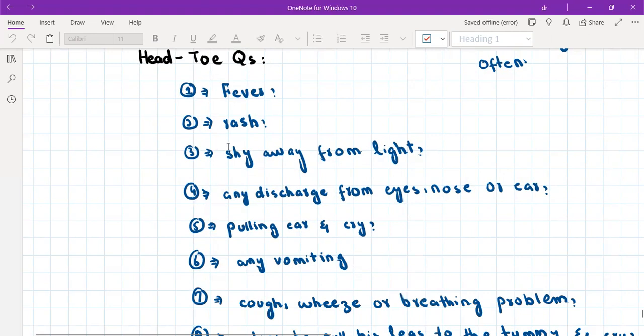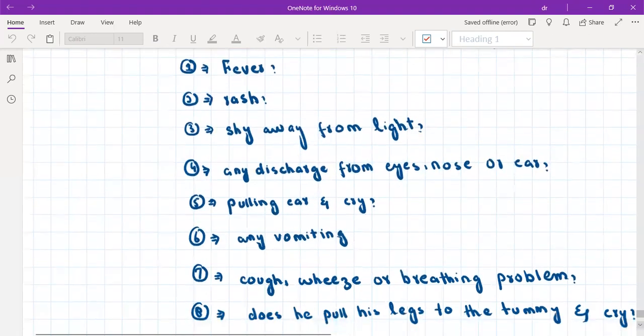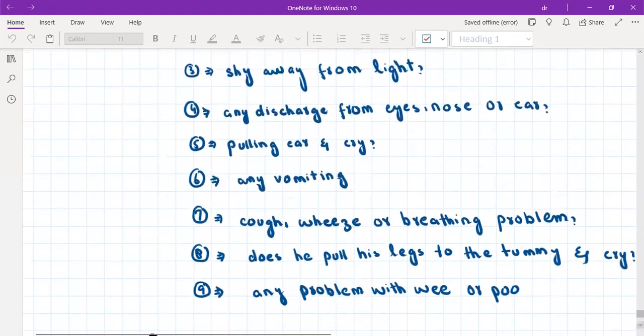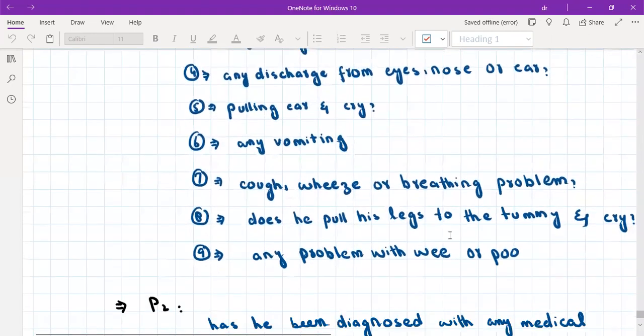Then we have eyes. So we'll ask about, does he shy away from the light? Any discharge from the eyes, nose or ear? Is he pulling his ear and crying? Okay. Which means otitis media. Then there is mouth. So we'll ask about any vomiting. Then after mouth, we have neck and then chest. So in chest, we'll ask about lungs. That is respiratory symptoms. So any cough, any wheezing, any breathlessness.